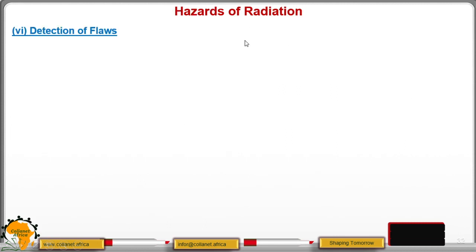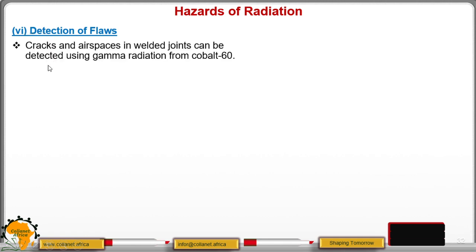Then from there, we have the hazards of radiation. But before we go to the hazards, we still have another use or another application: the detection of flaws. These are cracks or air spaces in the welding joint. How can we be able to detect the cracks? Using the gamma radiation from cobalt-60, we can be able to realize or to get the cracks because they have the high penetrating power.